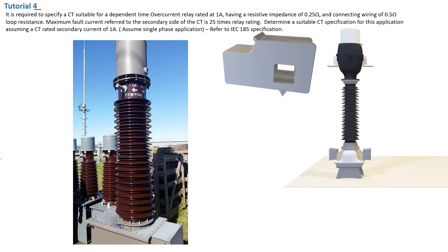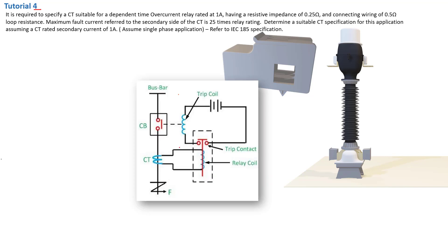Now, what is an overcurrent relay? As we can see here, the overcurrent relay rated at 1 amp is the relay connected at the secondary of the CT. This is our current transformer that we need to specify. We're not going to specify the relay — the relay is already there — but we need to choose and specify a current transformer that will work with the relay.